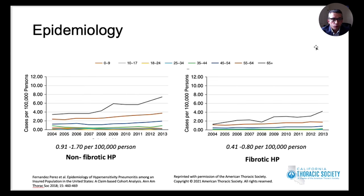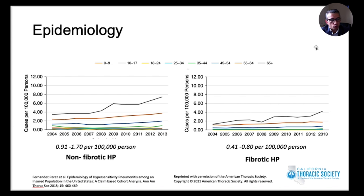Looking at fibrotic versus non-fibrotic categories, most of the increase in incidence is driven by the non-fibrotic component. However, in terms of fibrotic disease, most of the increase in prevalence belongs to the age group 65 and older. As the population grows older, fibrotic HP is becoming more prevalent.